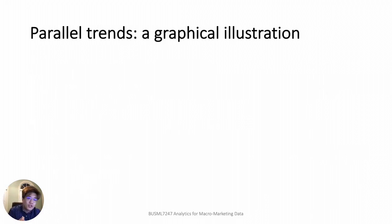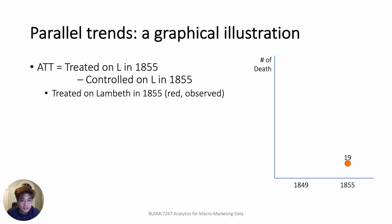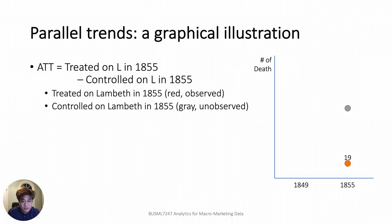Now I'm going to show a figure that graphically illustrates the parallel trends for Dr. Snow's data. This red dot indicates the death rate when clean water was treated on the Lambeth in 1855. What we want to obtain is the ATT — the difference between this observed death rate and the rate expected if the Lambeth were not treated with clean water that year. This hypothetical rate was not observed; let the gray dot indicate it. Our interest, the ATT, is the difference between the red dot and the gray dot, with the other observations used to infer the unobserved hypothetical rate.